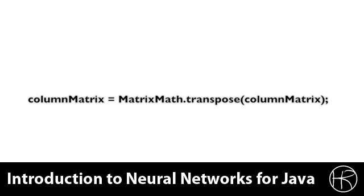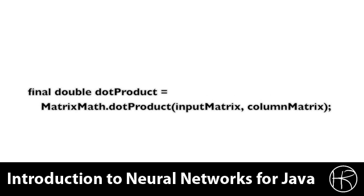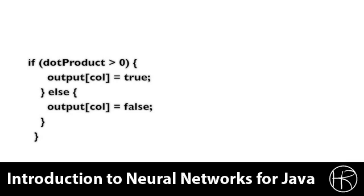Next, we transpose this column matrix so that it becomes a row matrix. This will allow us to easily take the dot product between this column matrix and the input data. Now that the column matrix is in the same orientation as the input matrix, we can take the dot product. This has the effect of multiplying the two matrices by each other element by element and summing the total, resulting in a single number. The dot product is calculated for every input value that was received.